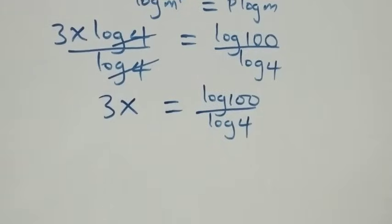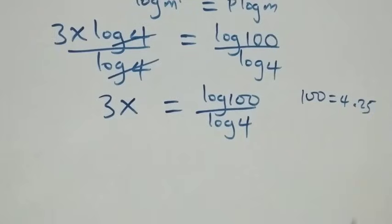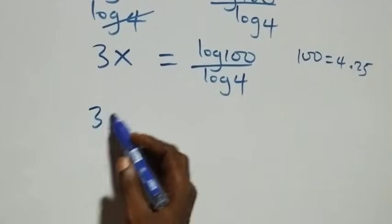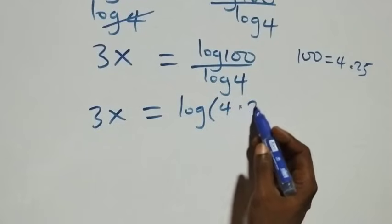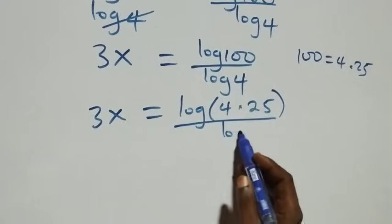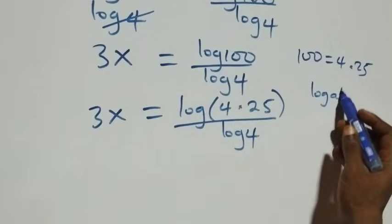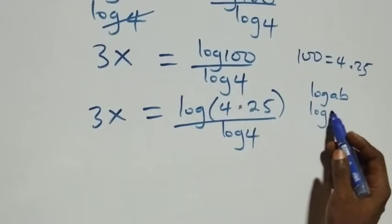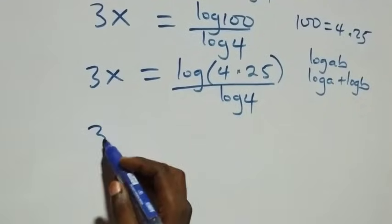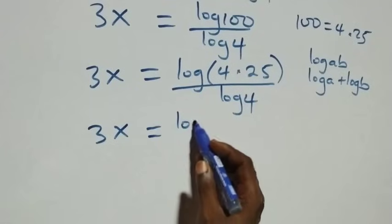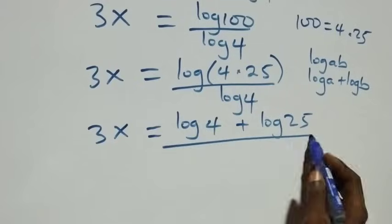From here, we can express 100 as 4 times 25. So what we have becomes 3x equals to log of (4 times 25) over log 4. This follows from the product rule of logarithms: log of A times B is the same as log A plus log B. So we expand to get log 4 plus log 25, all over log 4.